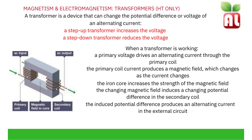Transformers. A transformer is a device that can change the potential difference or voltage of an alternating current. A step up transformer increases the voltage; a step down transformer decreases the voltage. We see transformers being used as part of the national grid, supplying mains electricity to the home. When a transformer is working, a primary voltage drives an alternating current through the primary coil. The primary coil current produces a magnetic field which changes as the current changes. The iron core increases the strength of the magnetic field. The changing magnetic field induces a changing potential difference in the secondary coil, which produces an alternating current in the external circuit.